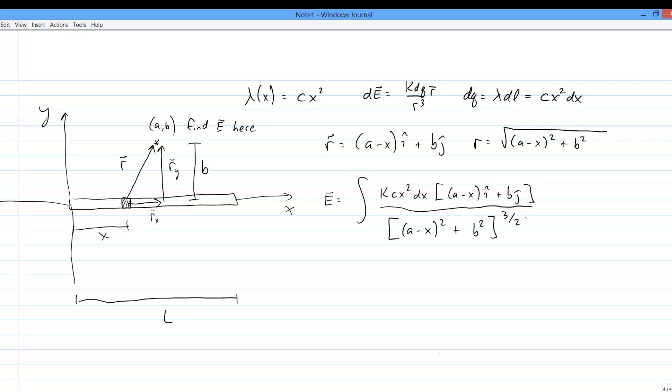So we put everything together. And this is the field made by some specific object, so this is a definite integral. And we need bounds. We're integrating with respect to x. And the least x ever is is 0. And the most x ever is is L.